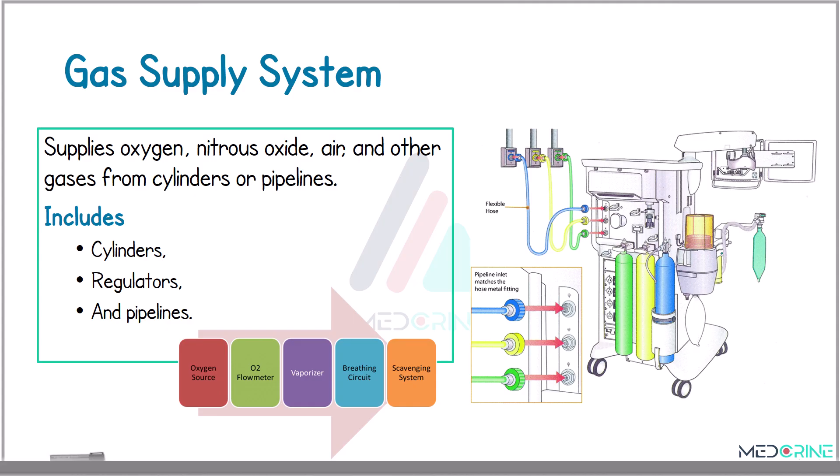The gas supply system delivers oxygen, nitrous oxide, air, and other medical gases from either high-pressure cylinders or hospital pipelines. It comprises a cylinder, cylinder regulators, and connecting pipelines, which ensure a continuous and safe gas supply.